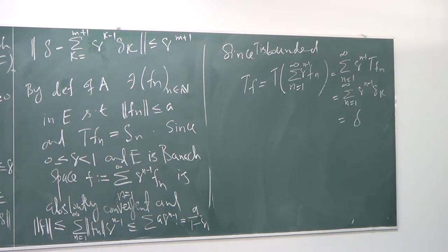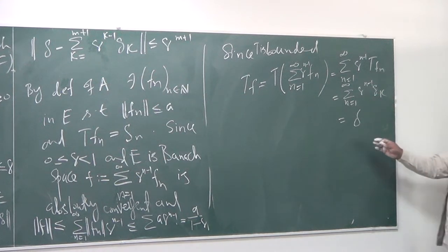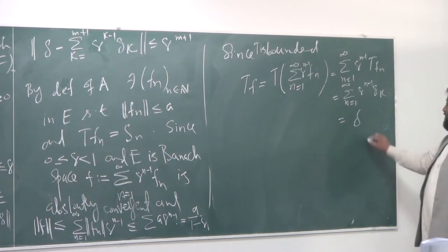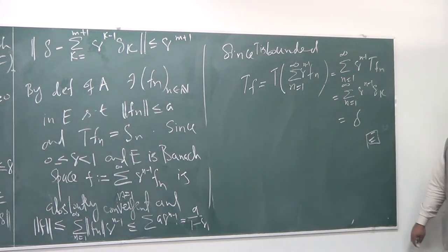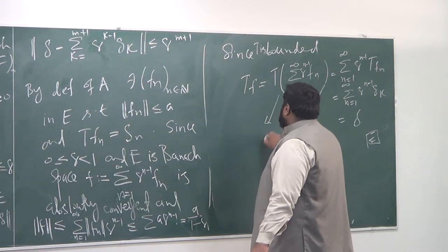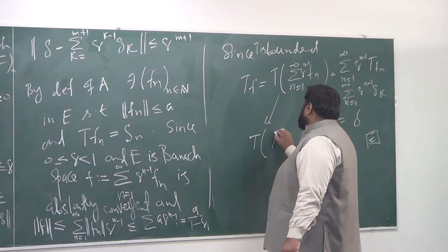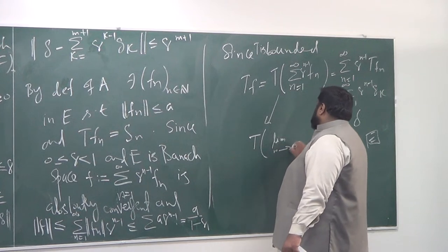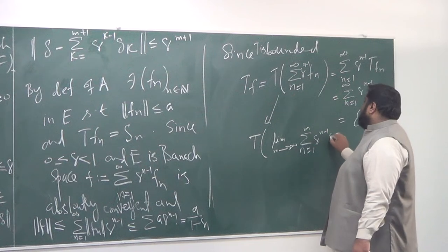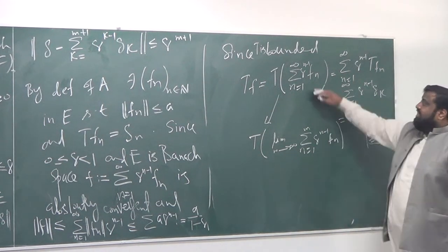So equality is done. We have constructed an F — we've found the preimage for G, which is F. Then T can be written as the limit as m goes to infinity of the partial sum from n equals 1 to m of Q raised to n minus 1 times F_n, because the series equals that limit.